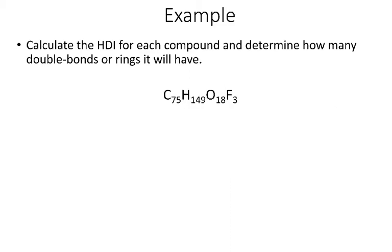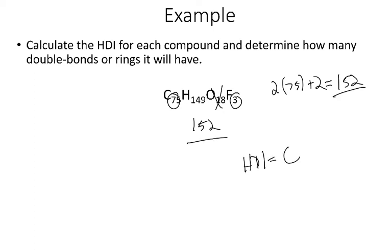Last example, so now I've got a big compound, but it works just the same as the other ones, so now my N is 75. 2 times 75 plus 2 is 150 plus 2, I need 152 hydrogens in order to be saturated. I can ignore the oxygens, and the fluorines count because it's a halogen and it counts just like a hydrogen, so effectively I have 152 hydrogens. So I'd need 152 to be saturated, that's how many I have, so my HDI in this case is 0.